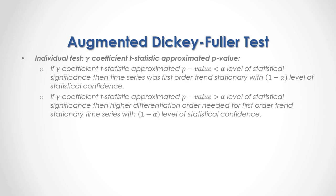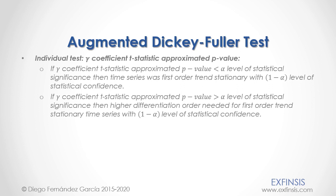We have individual tests for the gamma coefficient t-statistic approximated p-value. If the p-value is less than the alpha significance level, then the time series was first-order trend stationary with 1 minus alpha confidence. If the p-value is greater than alpha, then a higher differentiation order is needed. We can also perform a joint test of the constant, beta, and gamma coefficients through an F-statistic approximated p-value if they were included in the ADF test.